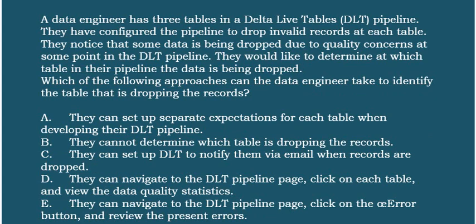Which of the following approaches can the data engineer take to identify the table that is dropping the records? Option A: They can set up separate expectations for each table when developing their DLT pipeline. Option B: They cannot determine which table is dropping the records. Option C: They can set up DLT to notify them via email when records are dropped. Option D: They can navigate to the DLT pipeline page, click on each table, and view the data quality statistics.